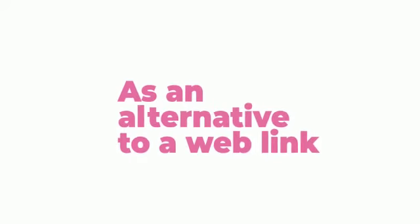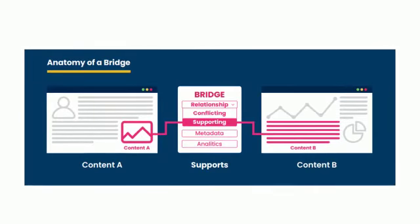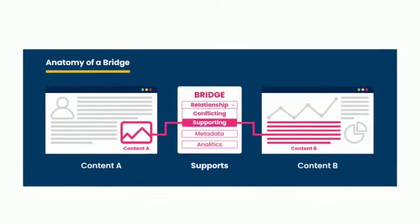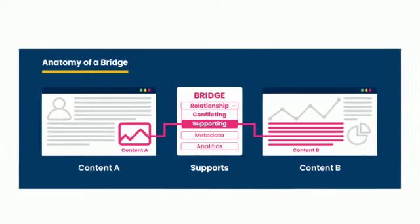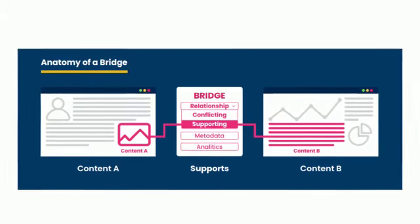As an alternative to a web link, Bridges connect ideas on web pages with a relationship. It creates a bi-directional deep link that is co-locatable. It could be a piece of text, part of an image, a segment of a video, or an audio clip. Relationships can be supporting, contradicting, and citing.